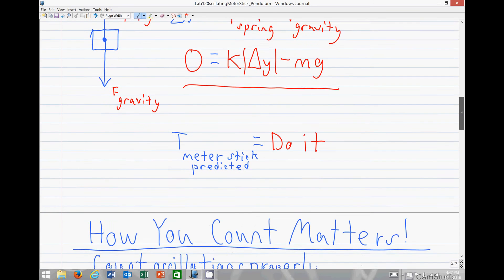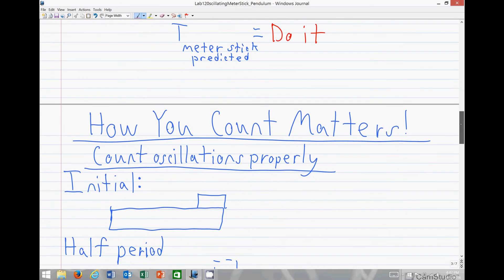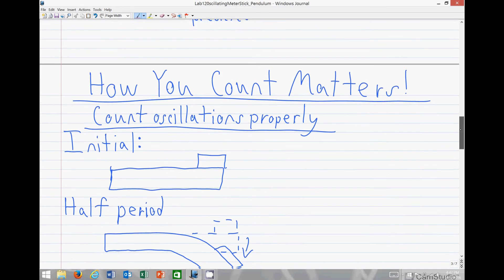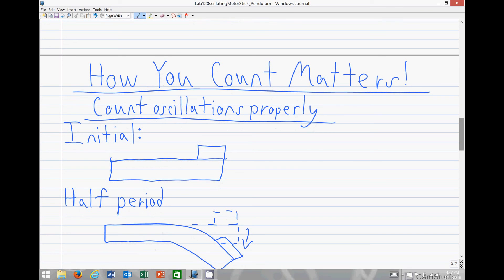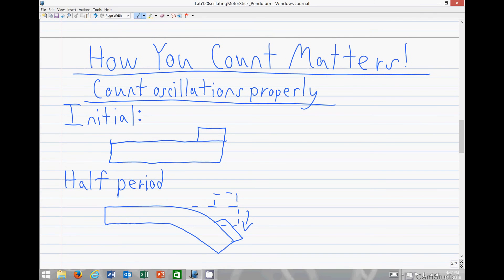Now, we must be careful with how we count these oscillations for our measured value for the period. A period is the time it takes for the system to move from an initial position back to the initial position.